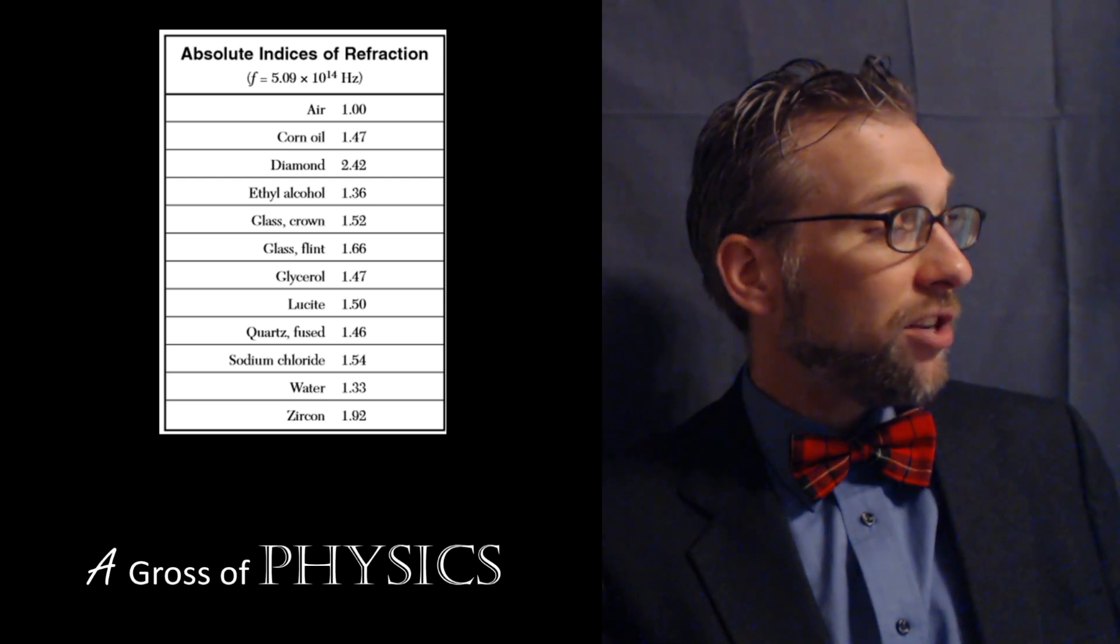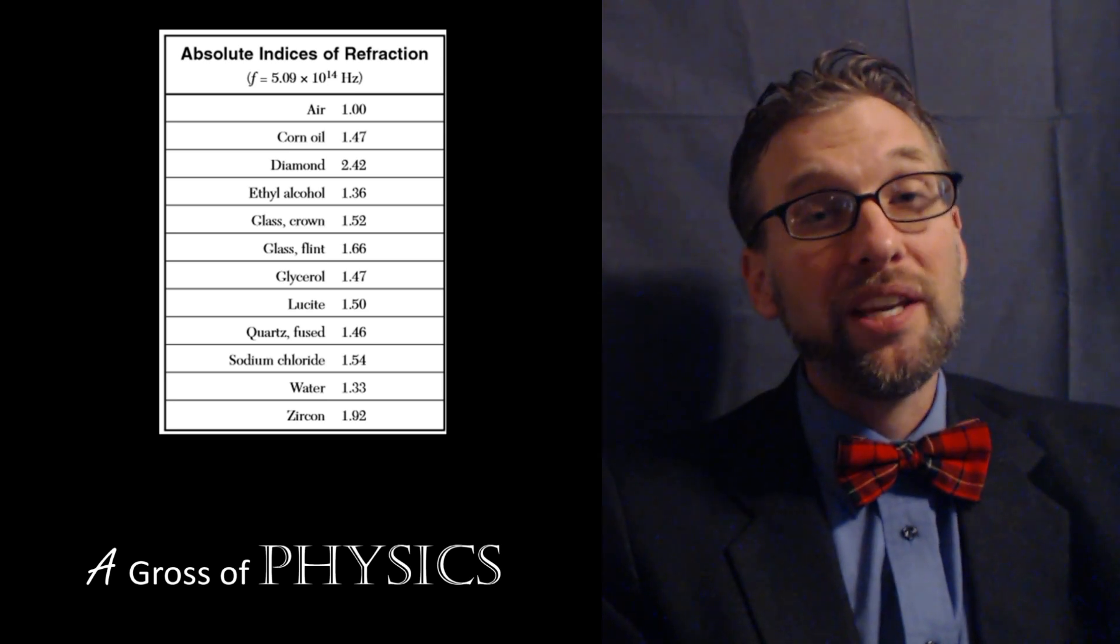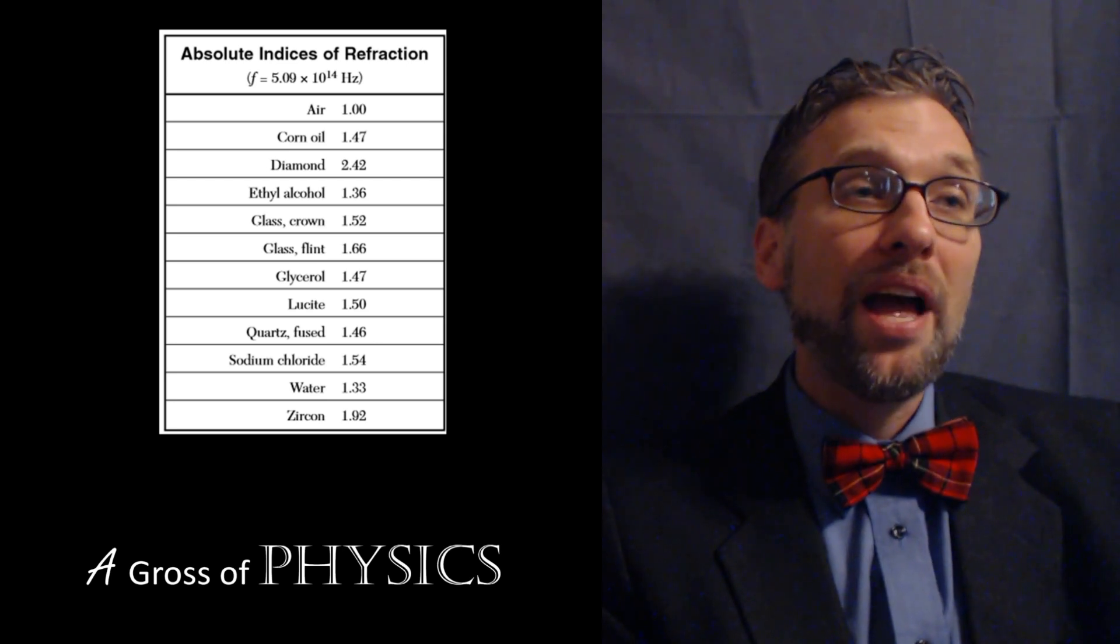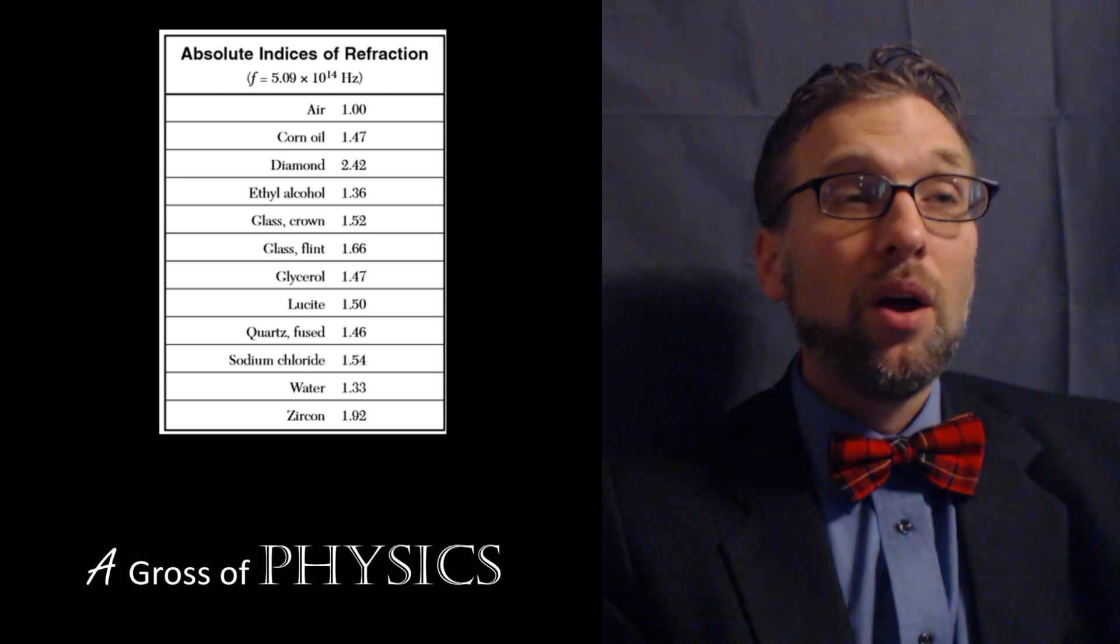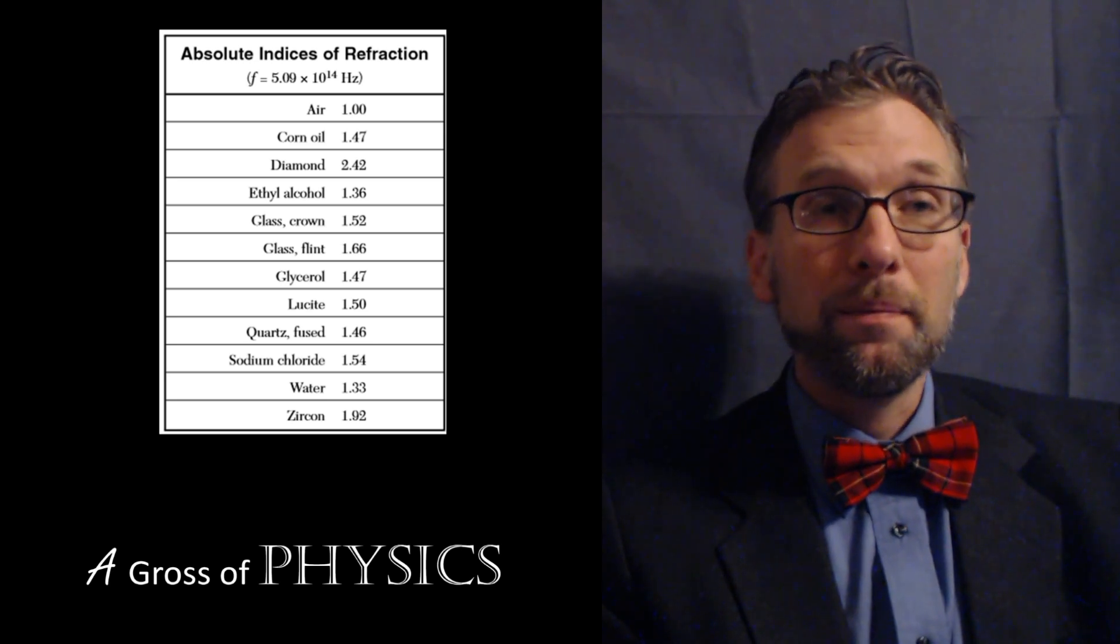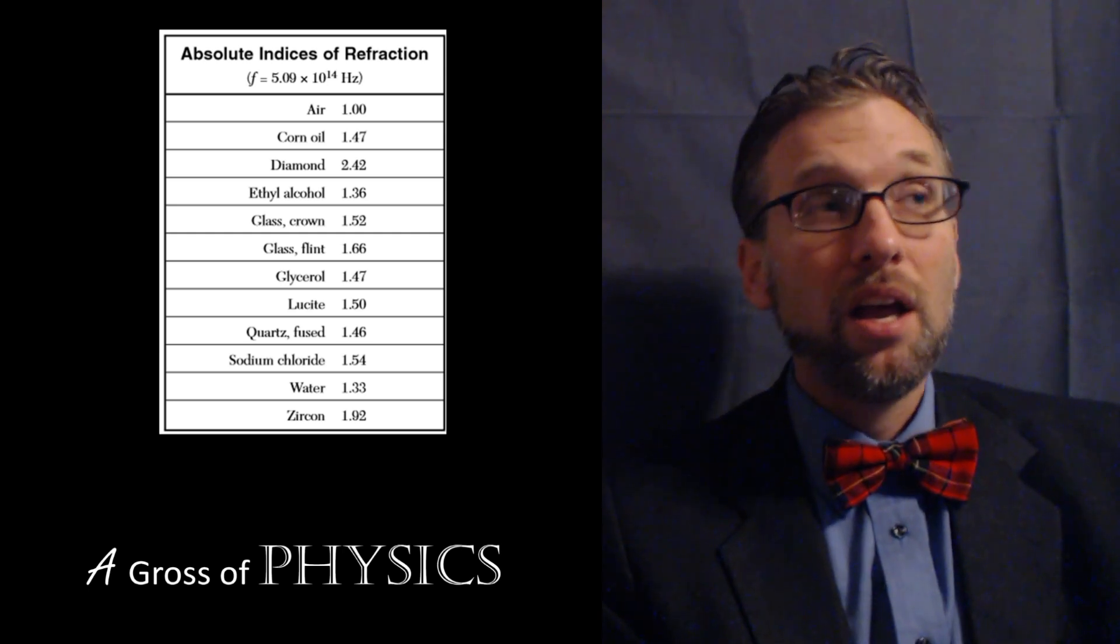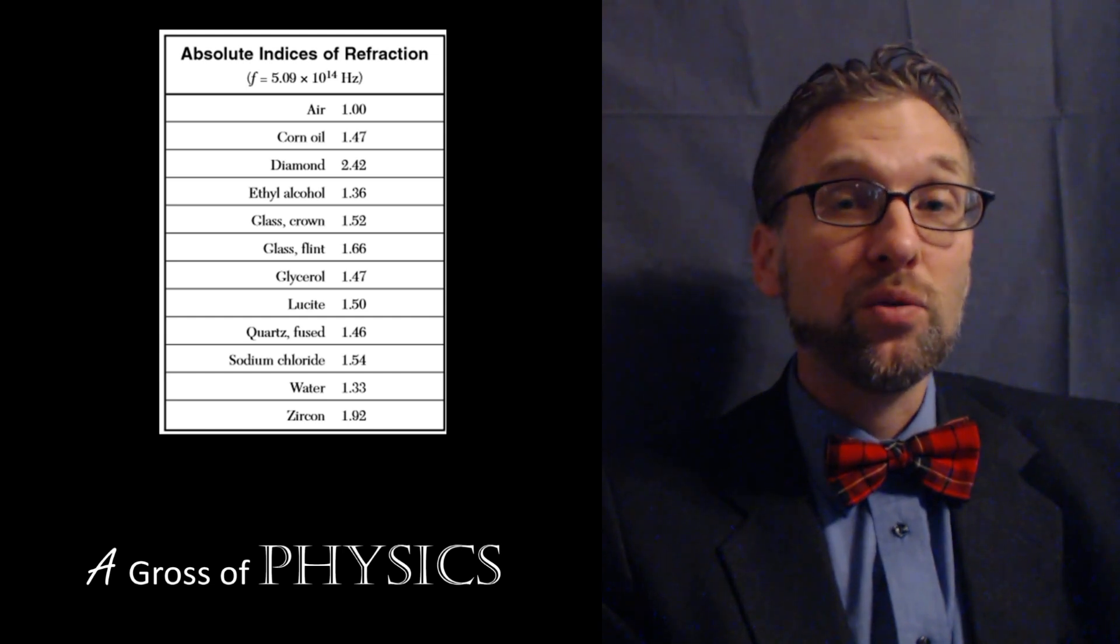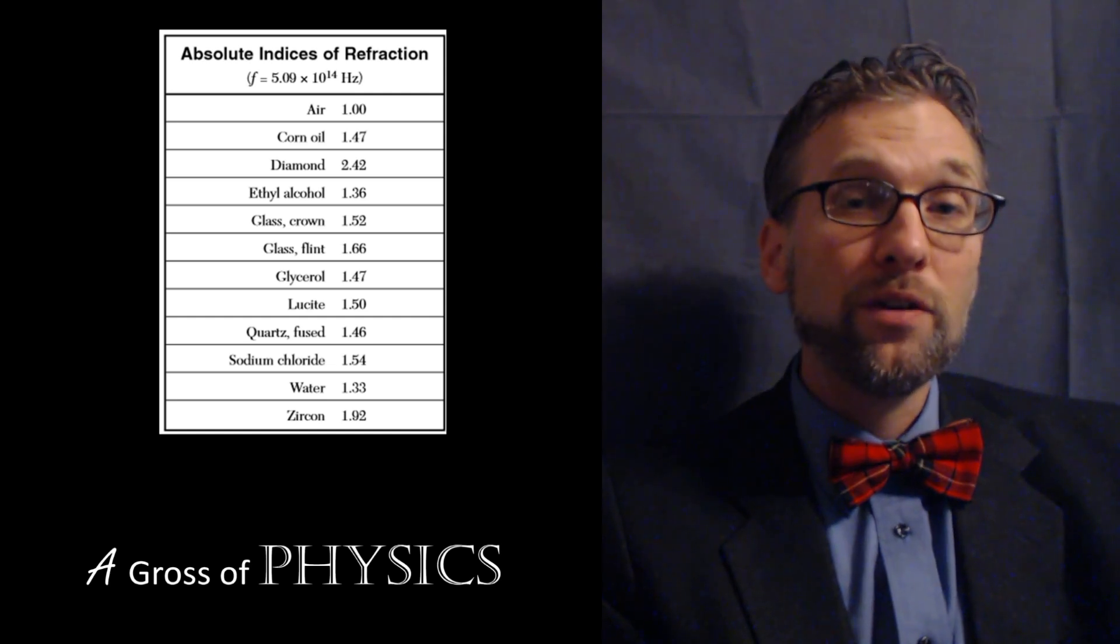Underneath that on the same page are listings for indices of refraction, or what we call the index of refraction for different materials. The index of refraction is a measure of how light travels, the speed of the light within a material medium. Although light can travel through space, it does slow down when it reaches other materials such as water, plastic, glass, even diamond.